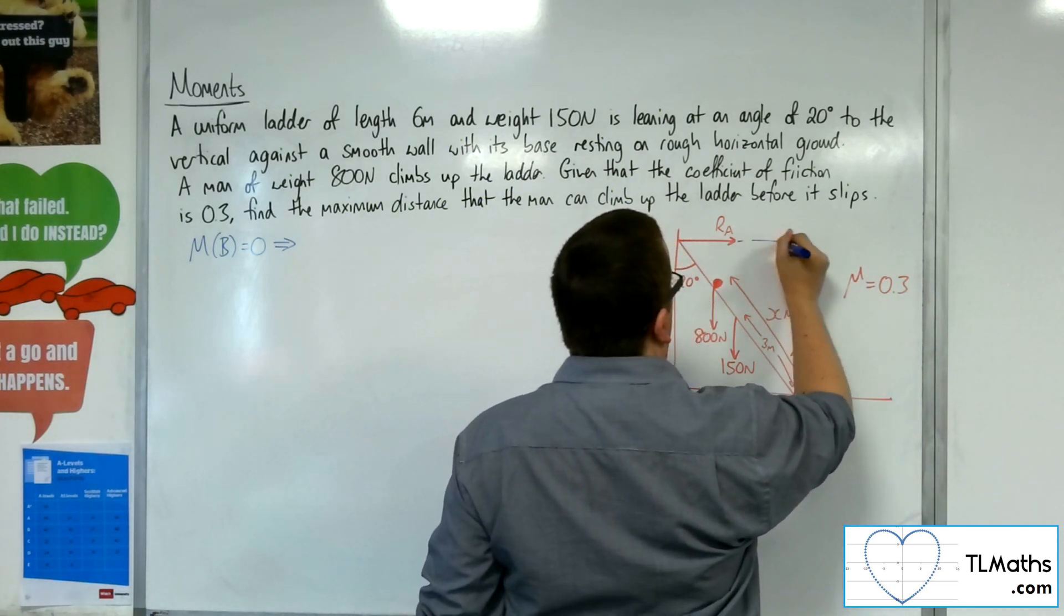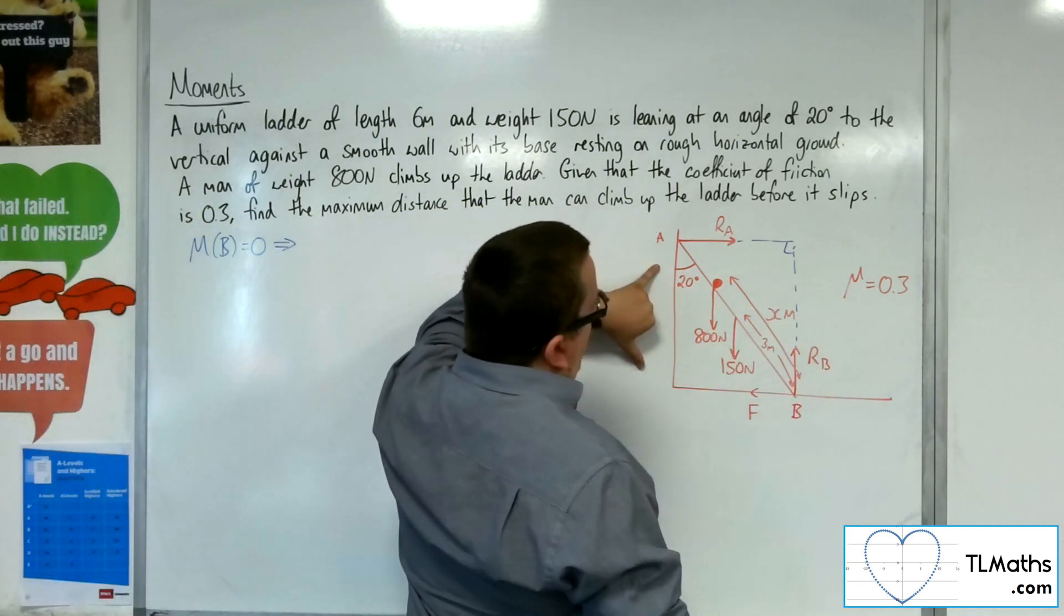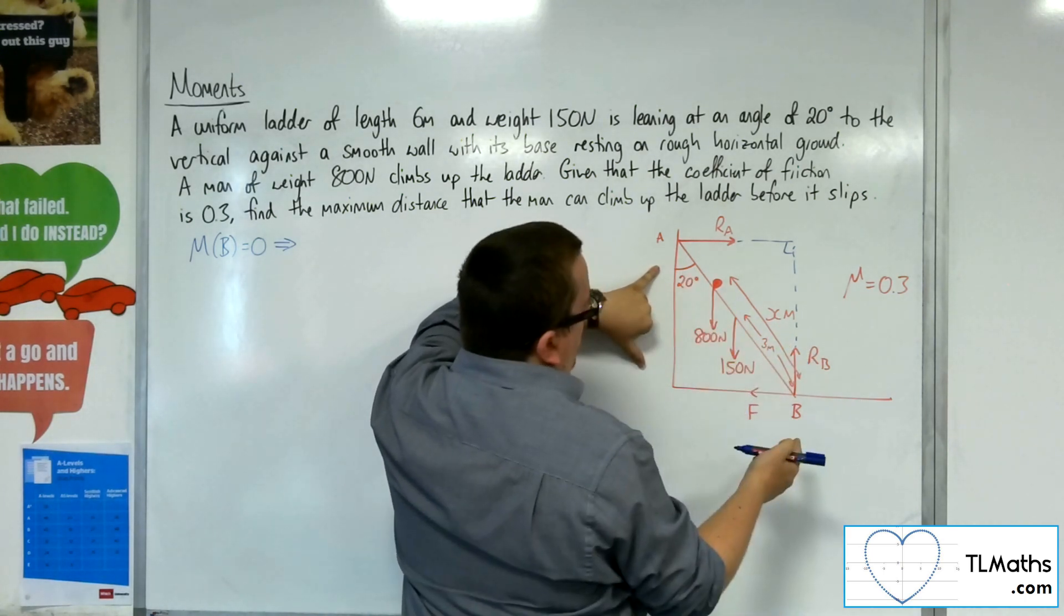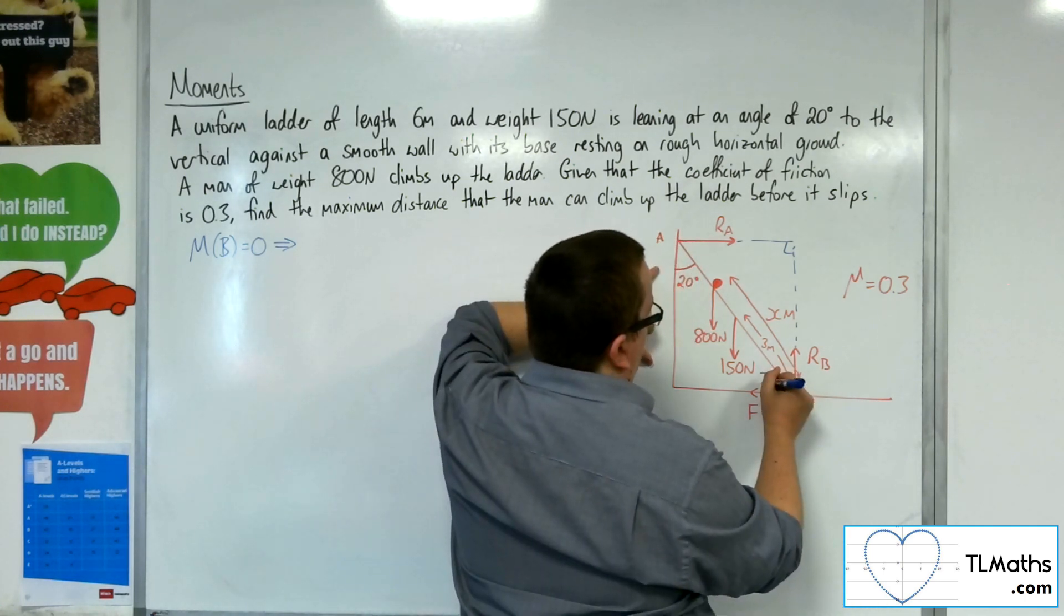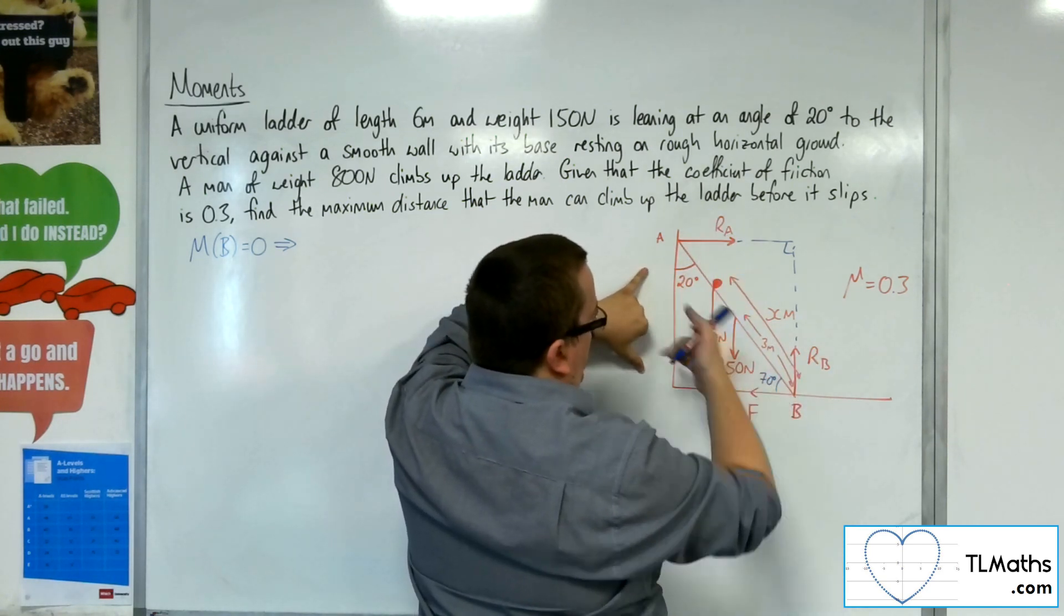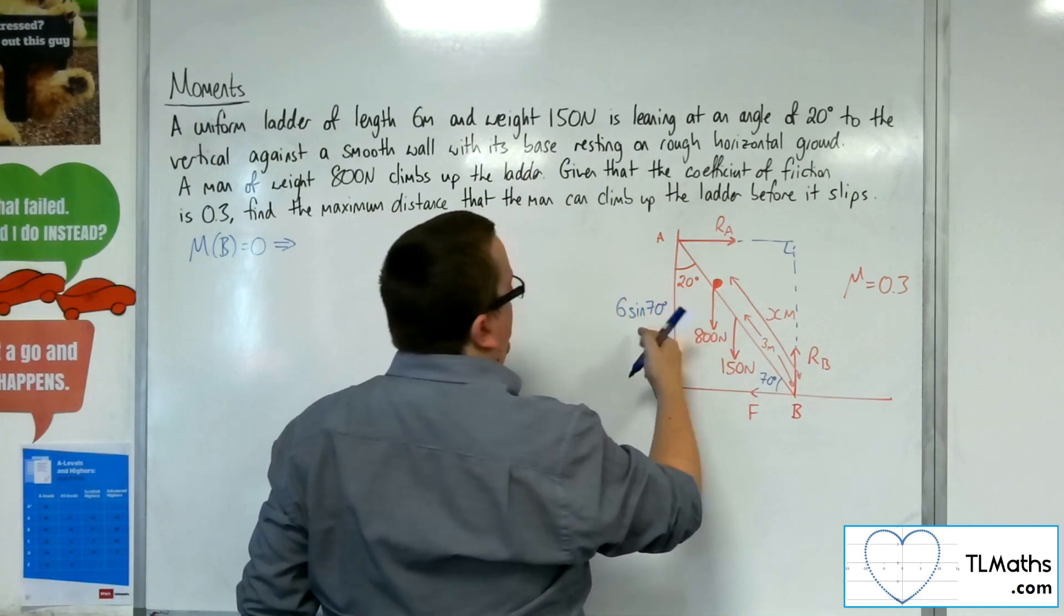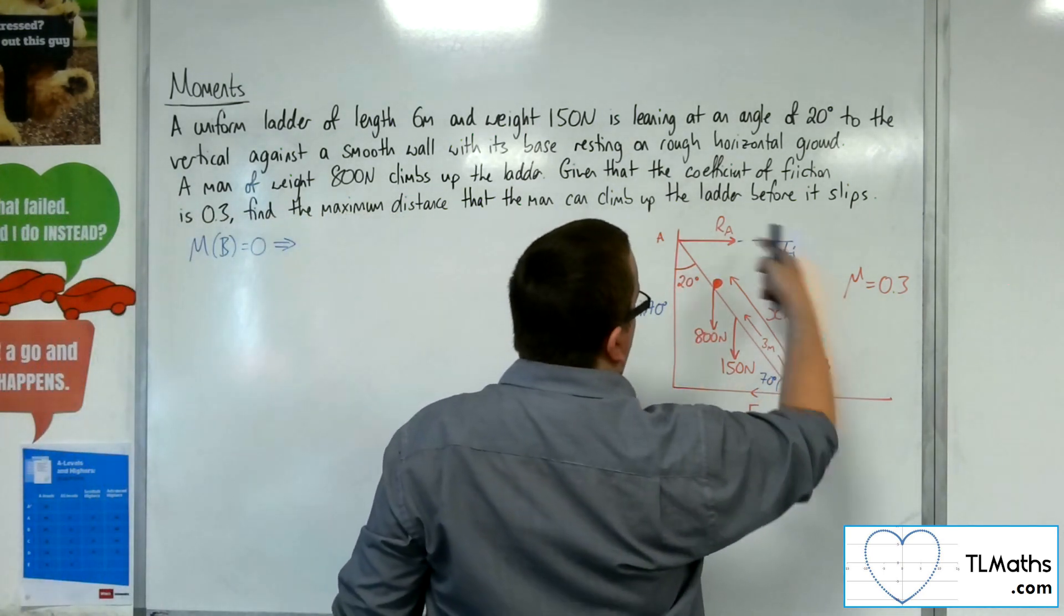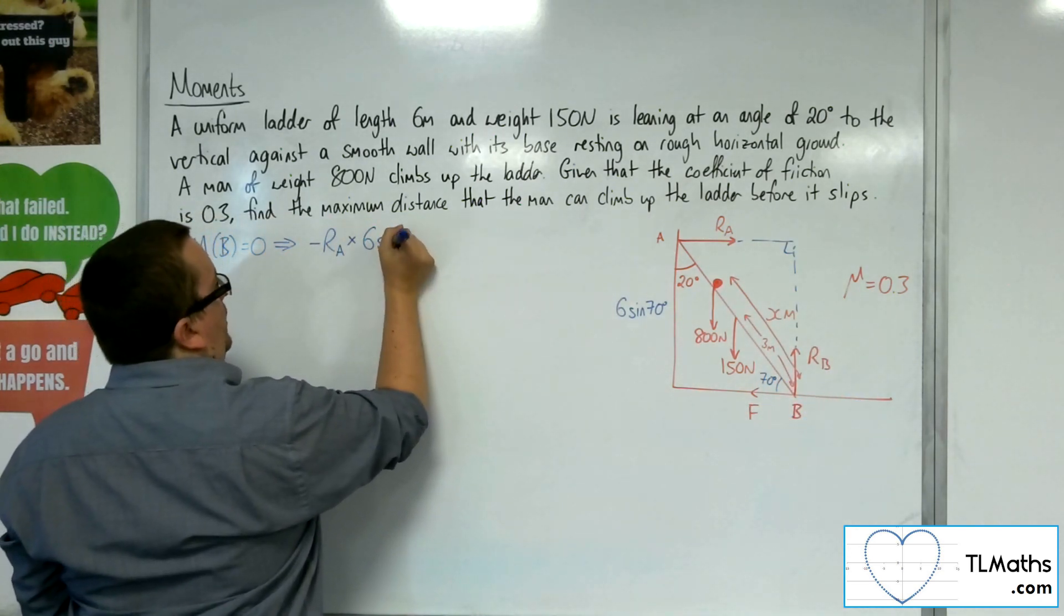Let's complete this triangle. So that distance is the same as that distance there. Now, if that's 20 degrees, then I could work with that if I wanted to. I think we're more used to having that angle down there, so that would be 70 degrees. So this is 6 meters, that's 70 degrees, and that's 6 sine 70, which would be the same as 6 cosine 20. You could use either or. So that's the distance, RA negative, so minus RA times 6 sine 70.